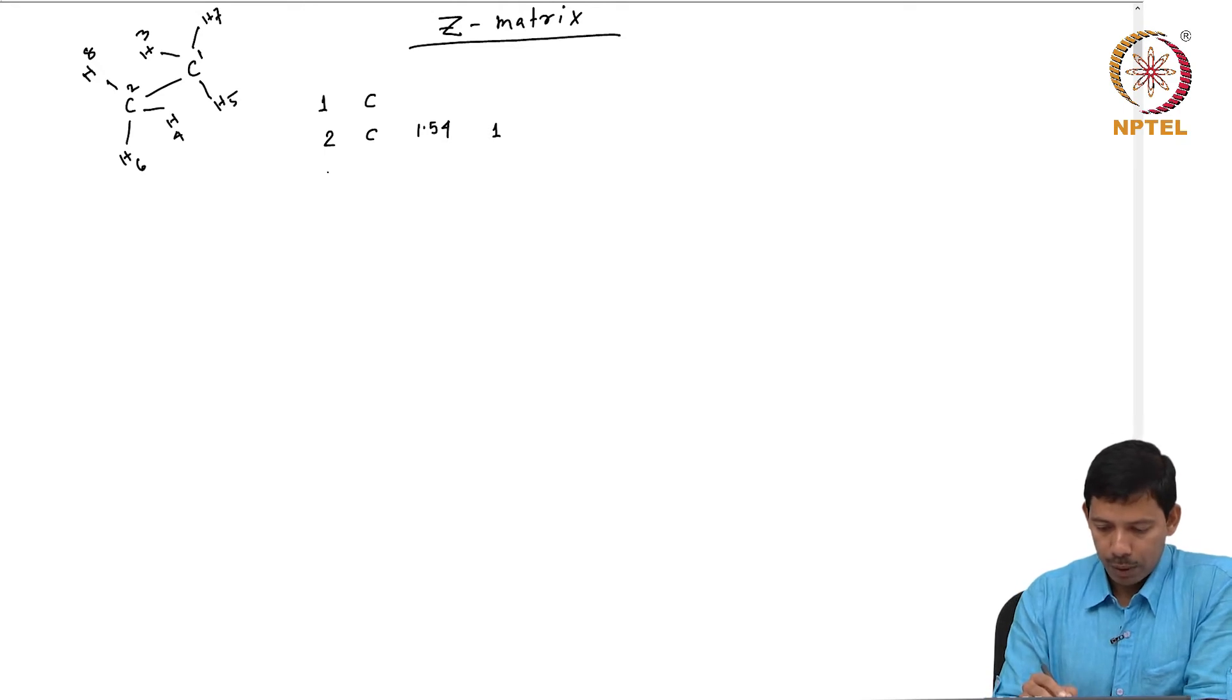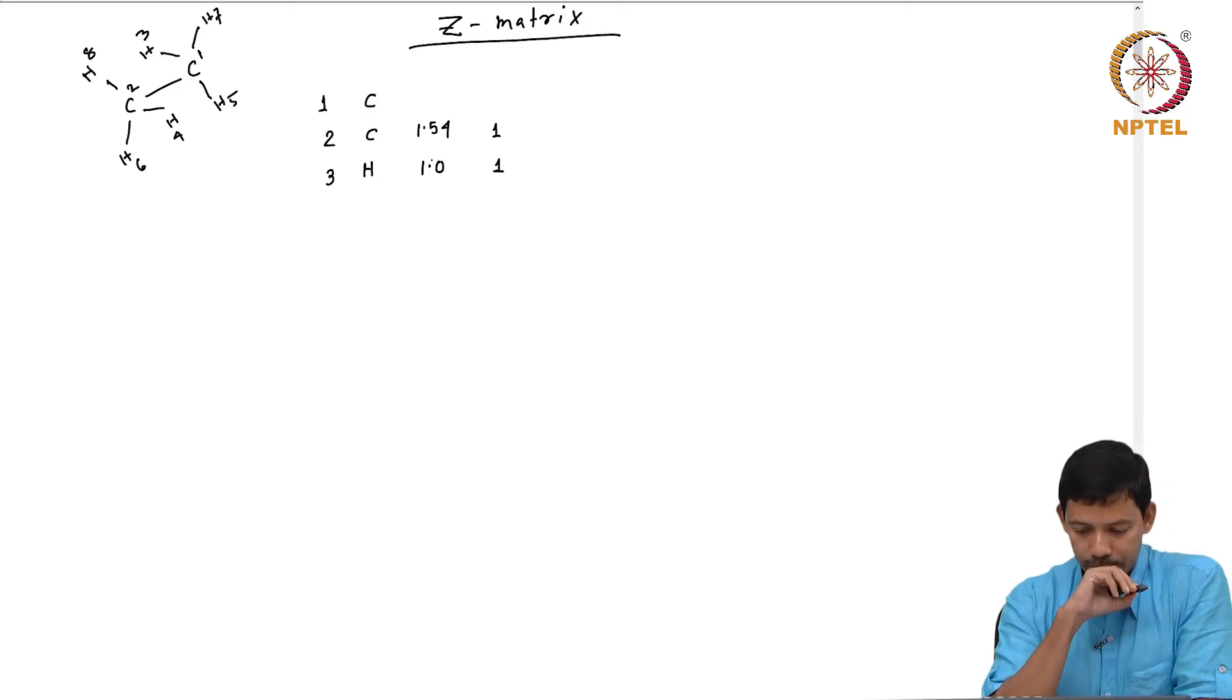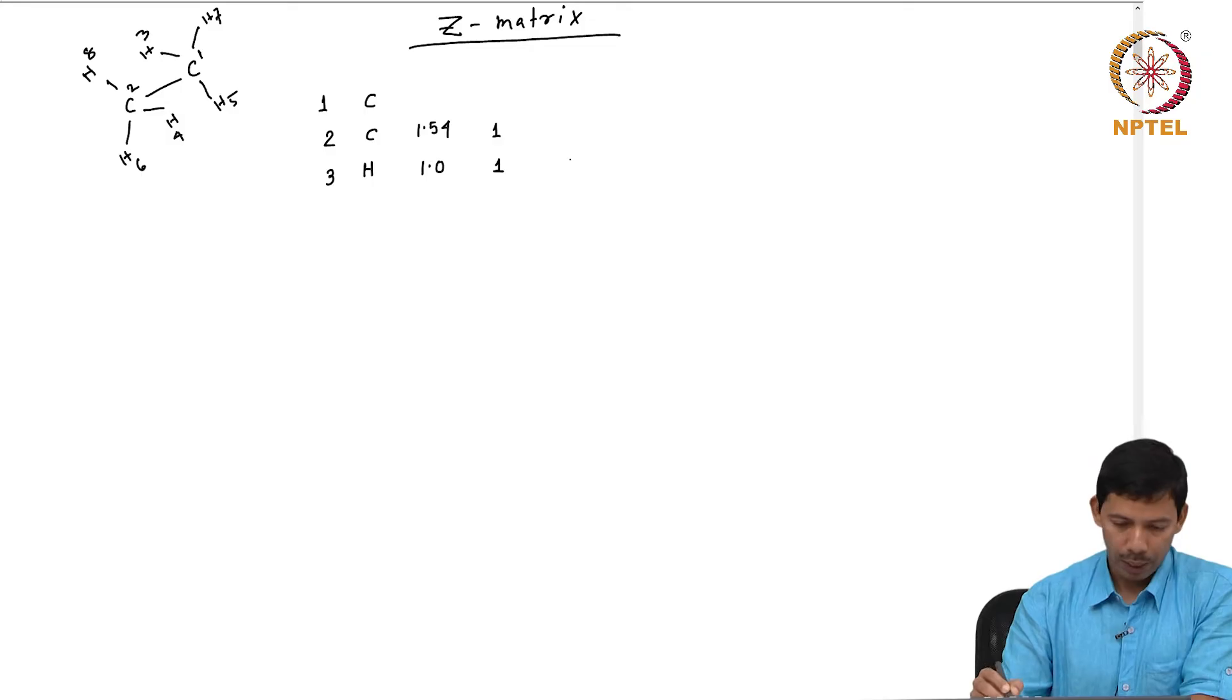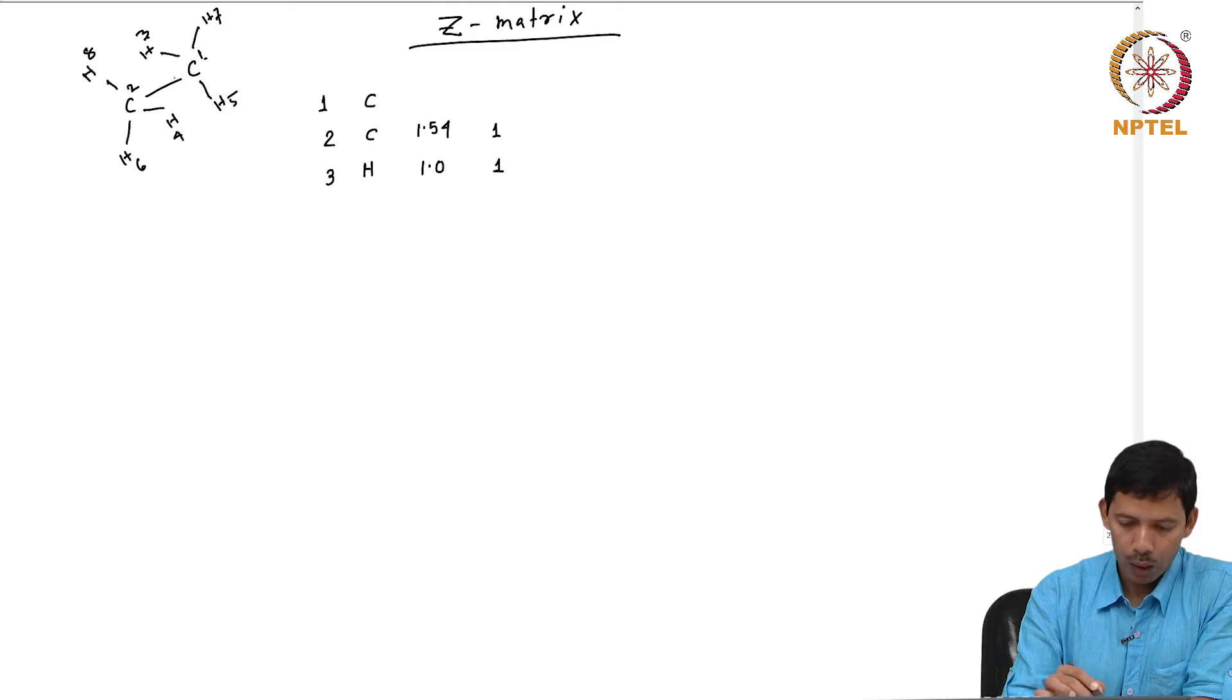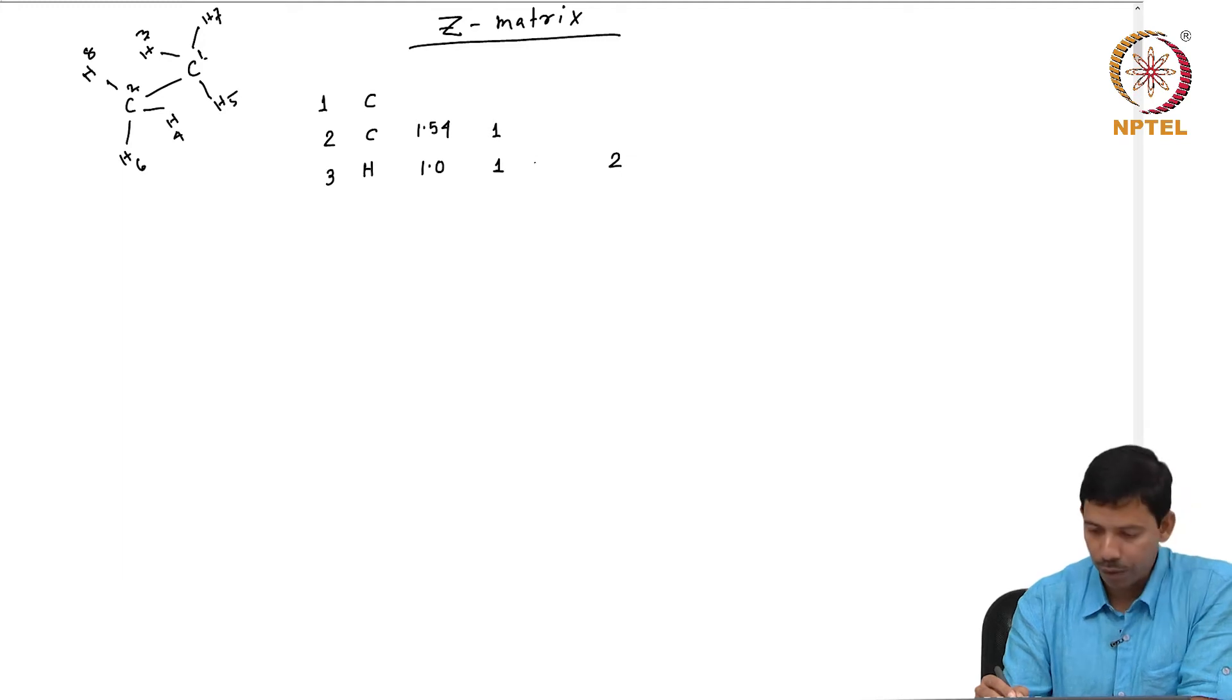What is my atom 3? My atom 3 is hydrogen and that is connected to 1 by a bond distance of 1.54 angstrom. 3 is also making an angle with 3, 1, 2. So I write here 3, 1, 2 and the angle is 109.5.